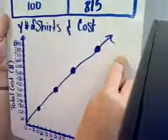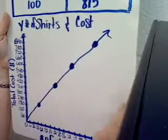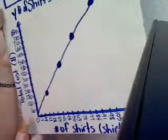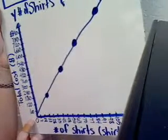Your line should have an arrow on this end to show that there could be orders greater than what you're showing on the graph. There should not be an arrow on this end because there can be no orders less than zero.